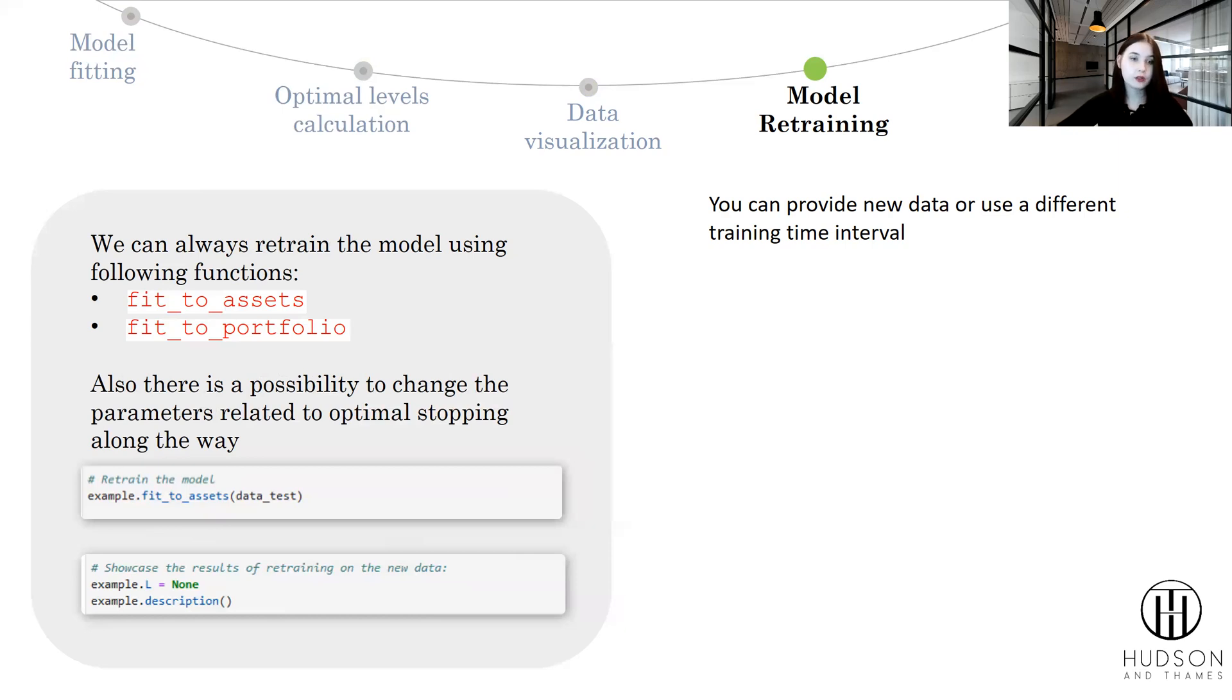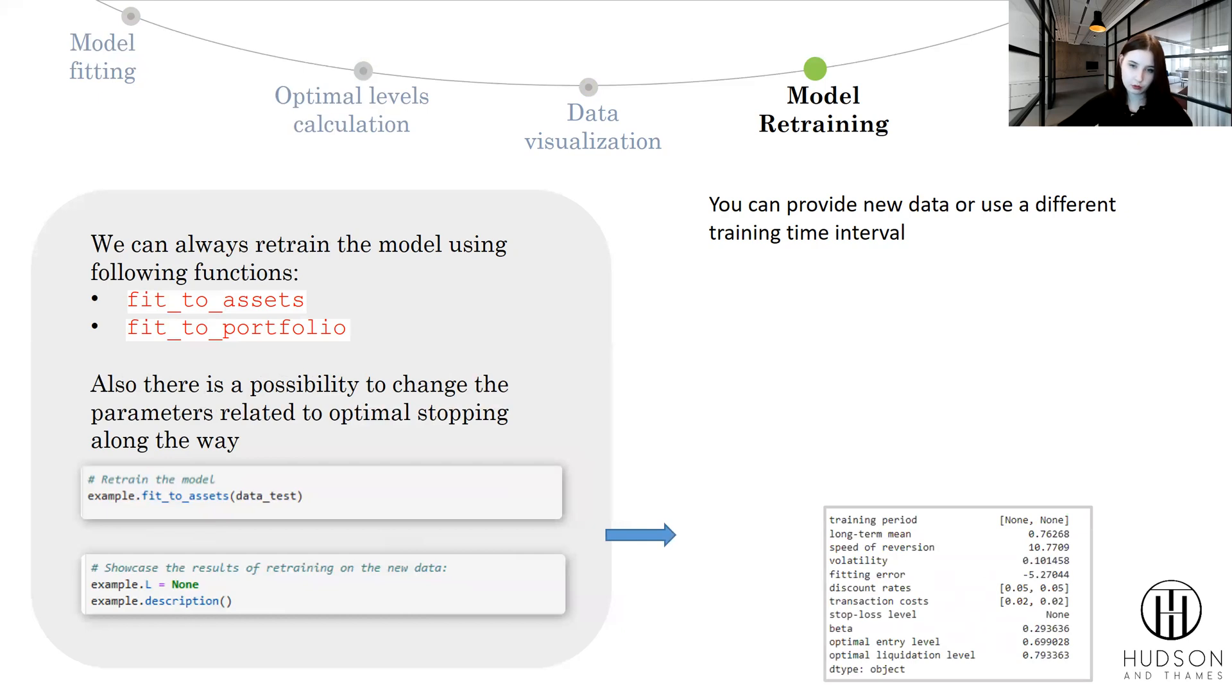As a basic way, we will try to retrain the model with a different training dataset, and we have the following results. Also, as we change our stop-loss to none, all the outputs for the functions that include stop-loss level in the calculations will not be outputted.